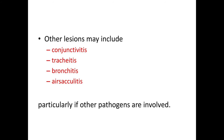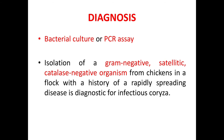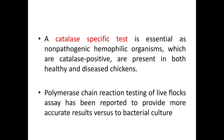Moving on to the diagnosis of Infectious Coryza. Diagnosis is by bacterial culture or PCR assay. The bacteria is gram-negative, catalase-negative, satellite-growing organism from chickens in a flock with a history of rapidly spreading respiratory tract infection and especially with swollen infraorbital sinuses. A catalase-specific test is essential, as non-pathogenic hemophilic organisms which are catalase-positive are present in both healthy and diseased chickens. PCR testing has been reported to provide more accurate results compared to bacterial culture.